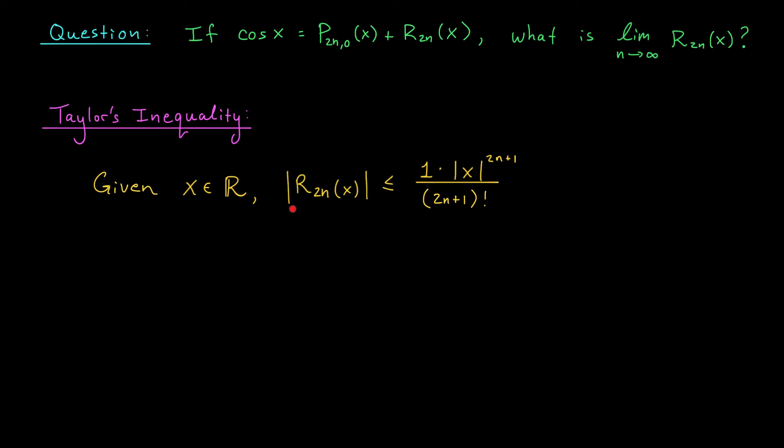According to Taylor, if we want to measure the size of R_(2n), we need to look at the (2n+1)st derivative of cos(x). Well, hold on a second. That derivative will either be plus or minus cos or plus or minus sine. So in absolute value, at any point x in its domain, that derivative is going to be bounded above by 1. What this tells us is that for any x value, whatever x you want, the remainder term in absolute value is bounded above by 1 times the absolute value of x^(2n+1) divided by (2n+1)!.